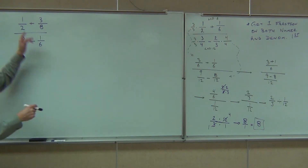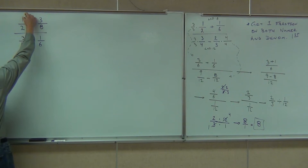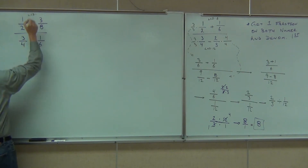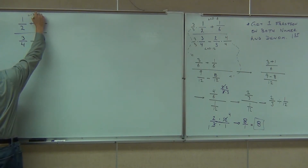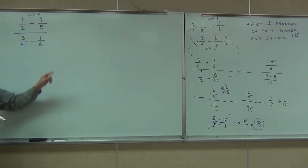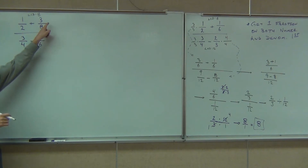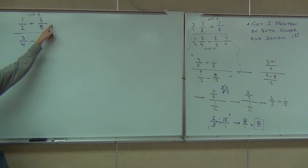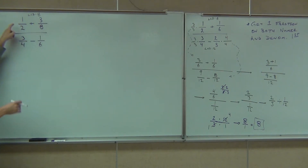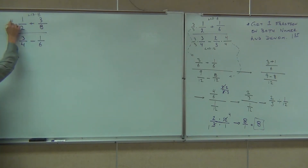So our numerator — we've got to find an LCD. The LCD is pretty much given to you; the LCD is the 8. Now, we're not going to multiply this fraction because it's already got the 8. However, we will multiply this fraction by 4 over 4.